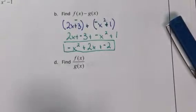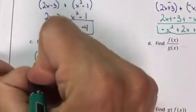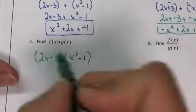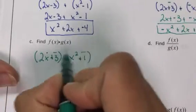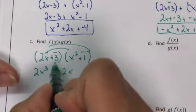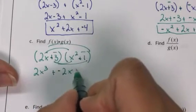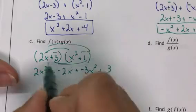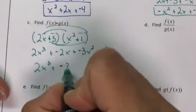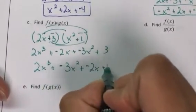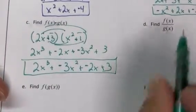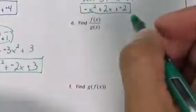To multiply the functions, use distribution — think of the visiting-neighbors method. 2x visits and gives 2x³ and -2x; then -3 visits and gives -3x² and +3. Nothing combines, so write it in standard form: 2x³ - 3x² - 2x + 3. For division, you get (2x - 3) / (x² - 1).